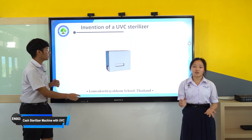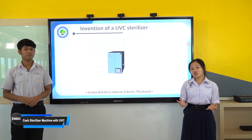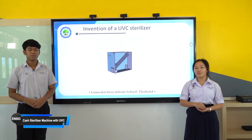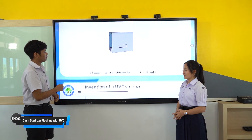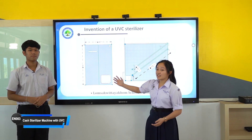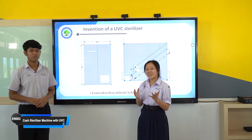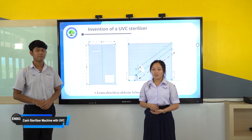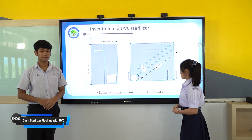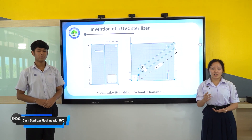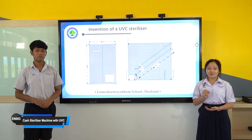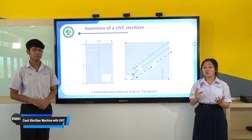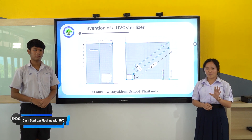Next is the methods. The first topic is the invention of the UVC sterilizer for sterilizing pathogenic microorganisms on banknotes and coins. Here are the details of our machine structure: the height is 60 cm, the length is 70 cm, and the width is 40 cm. Inside the machine there is an inclined surface of 71 cm, and there are UVC lamps. The distance between the UVC lamps and the inclined surface is 5 cm.